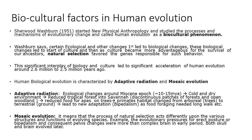Now we will study biocultural factors and how they come into existence. Sherwood Washburn gave the concept of neophysical anthropology. He studied the processes of evolutionary change and found that evolution in humans is a biocultural phenomenon — due to ecological changes, some biological changes happened first, and these were responsible for the start of culture. As culture became advantageous for survival, natural selection favored the genes responsible for such behavior.